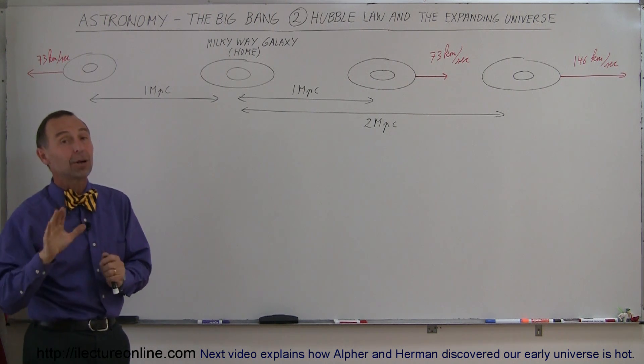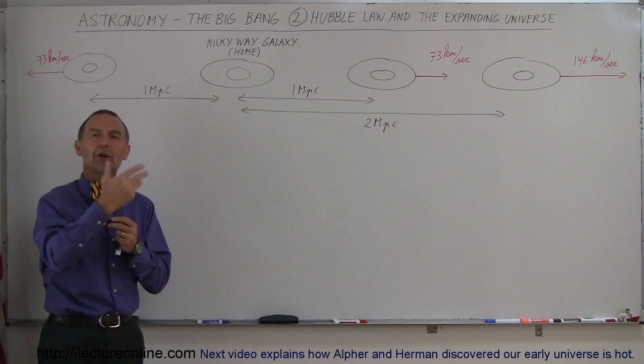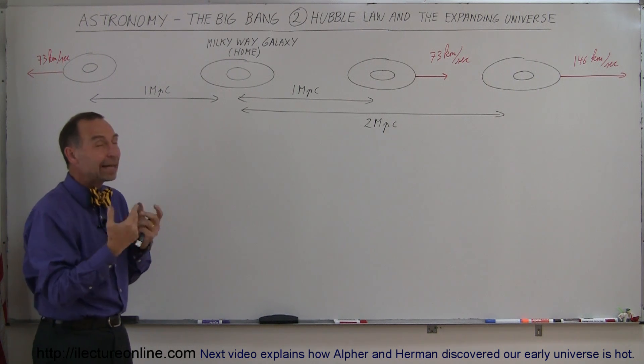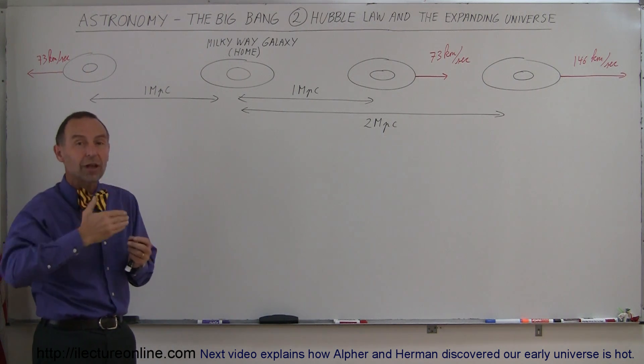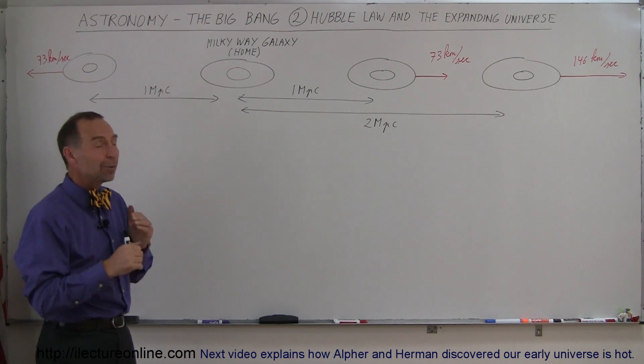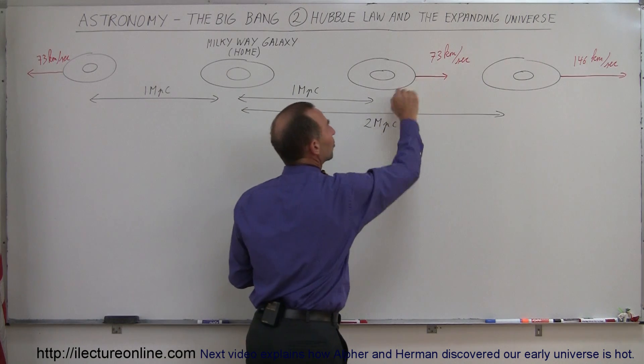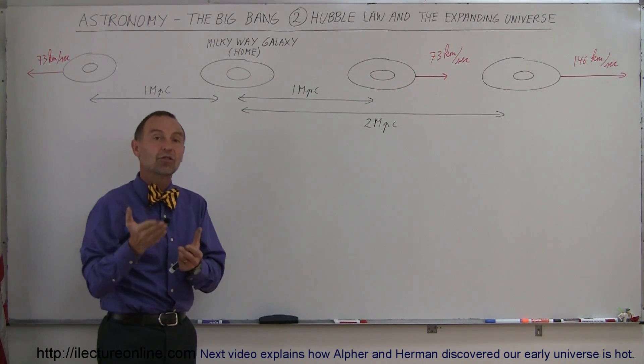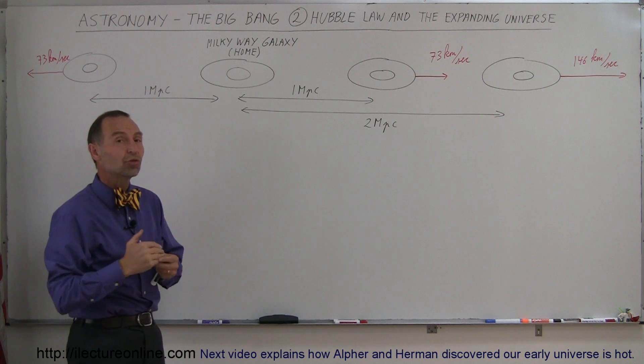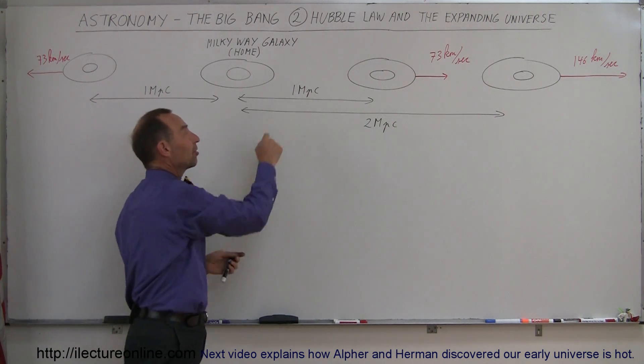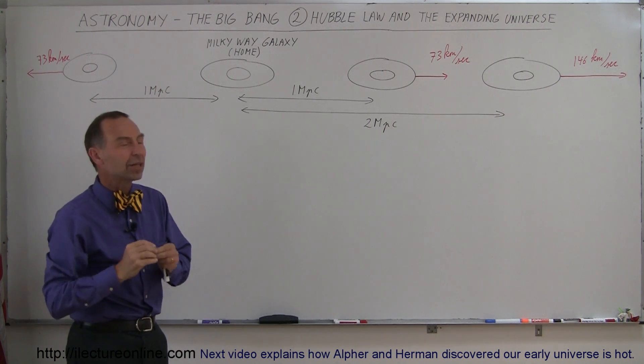Well, actually, back in Hubble's day, since they had such a hard time deciding how far things were, they were not able to figure out the distance-velocity relationship very accurately, and he was off by quite a big factor. He thought it was more like 500 kilometers per second per megaparsec. Mega, of course, is million, and parsec is 3.26 light-years, so 1 megaparsec is 3.26 million light-years.